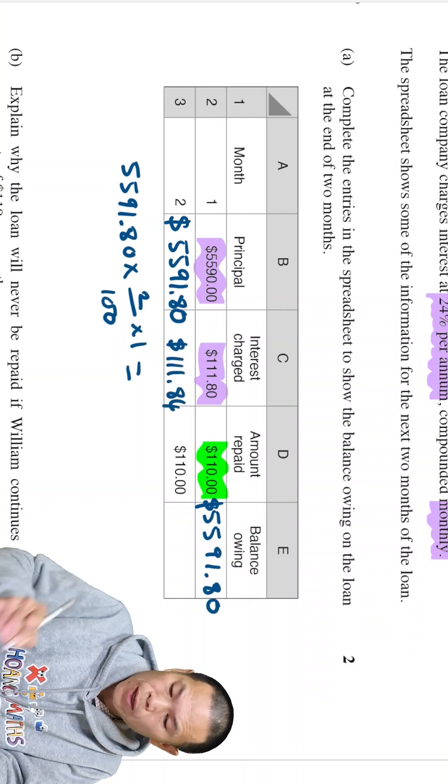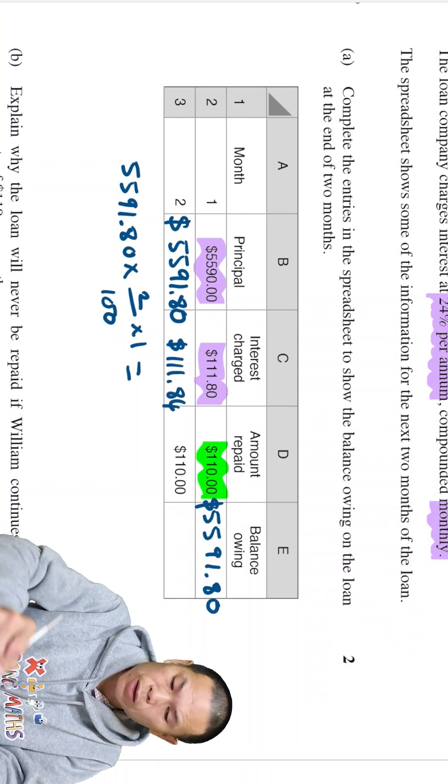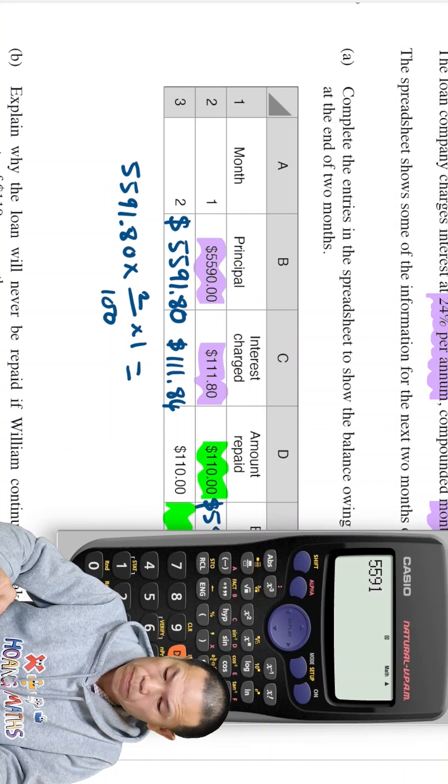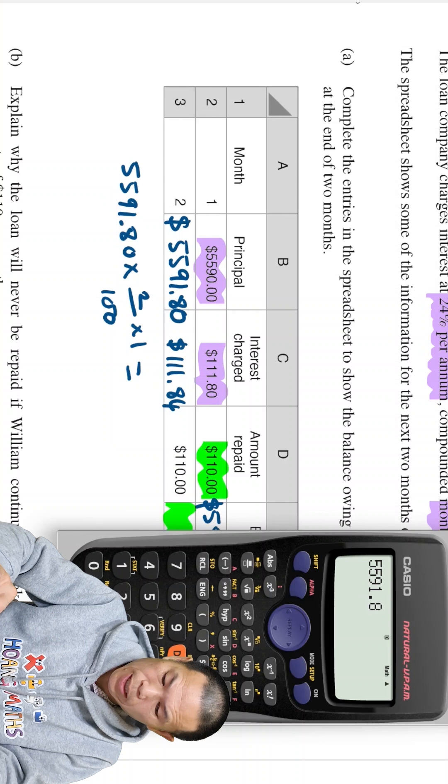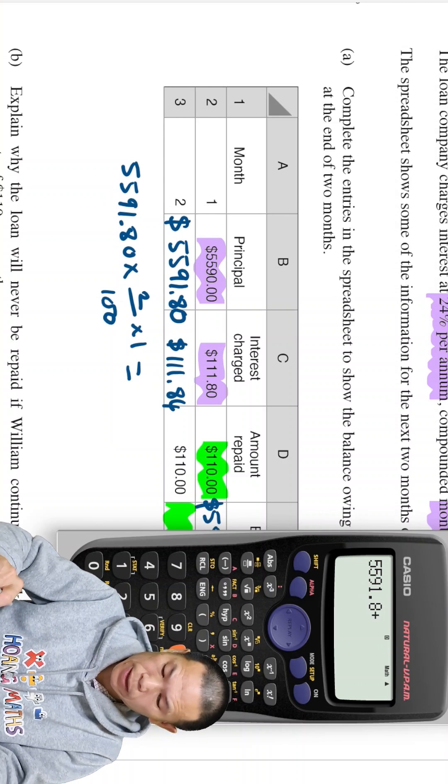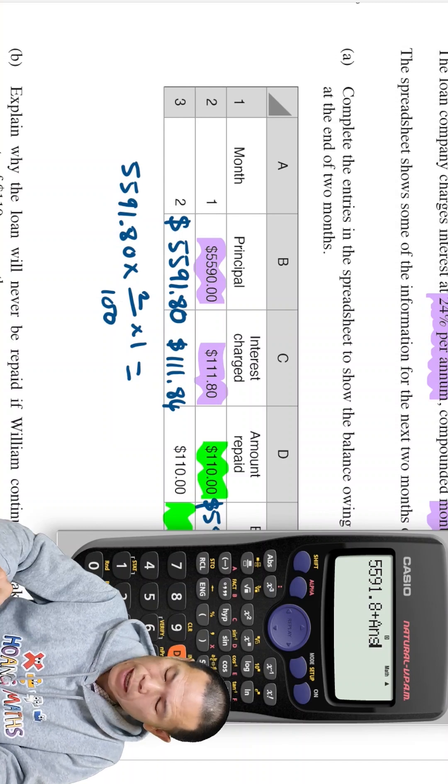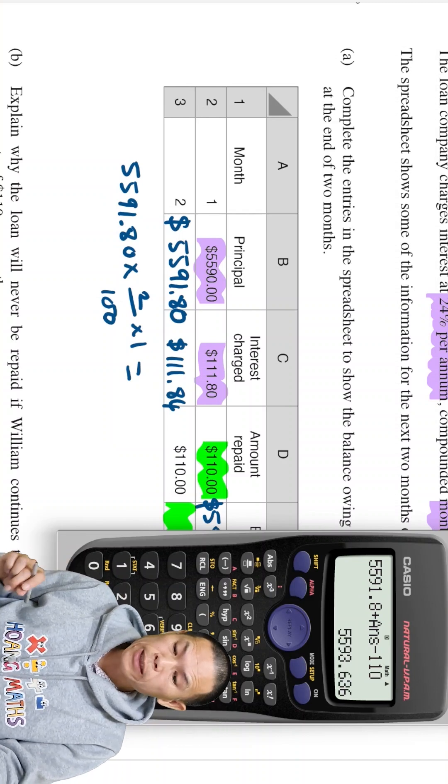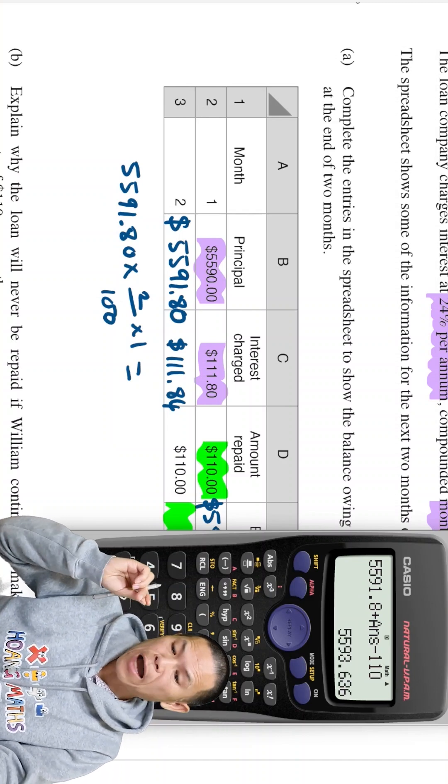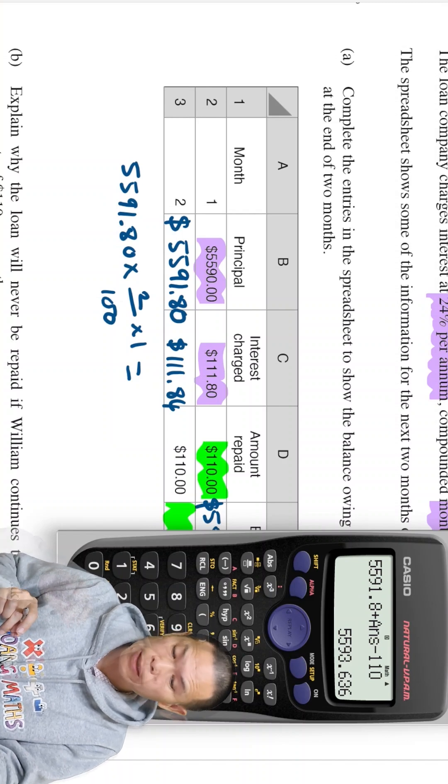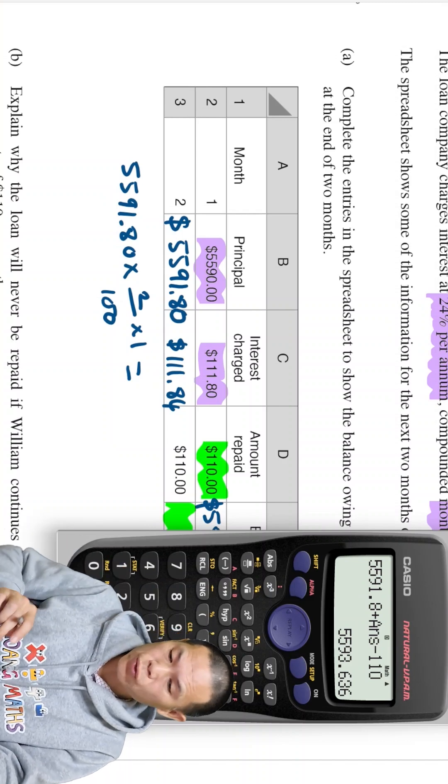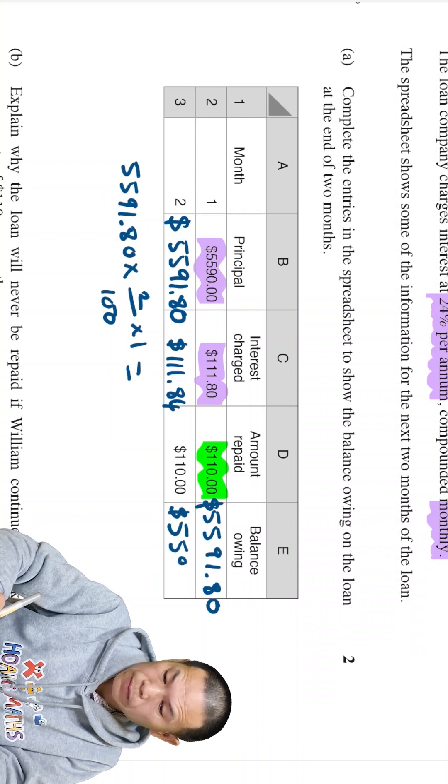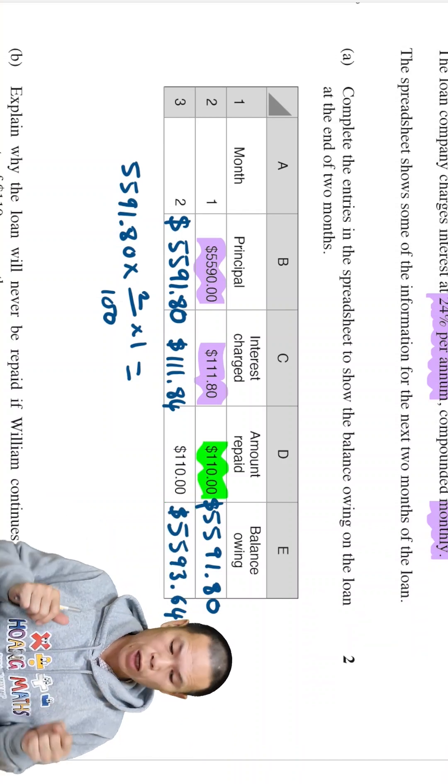And then work out the balance. $5,591.80, we add the interest. So that is the answer. Then we minus $110. There you go. So that is $5,593.64. Let me clear this. So there you go.